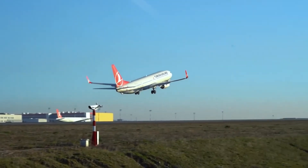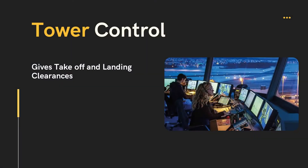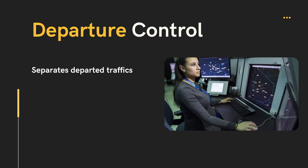After the aircraft departs, the tower controller transfers responsibility to the departure controller if the airport has a radar facility. If not, the pilot continues navigation on their own — either under a VFR flight plan or according to a standard departure procedure planned in their IFR flight plan.